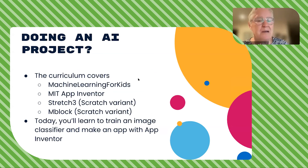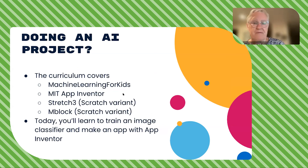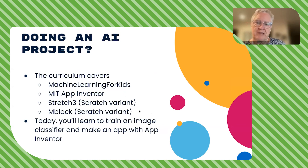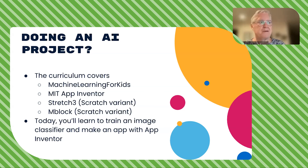If you're doing an AI project, the curriculum covers four different platforms: machine learning for kids to train a model, then App Inventor with its extensions, and a couple of variants of Scratch. That's all covered in the curriculum. The general process is the same: you train the model, test it, and then add it to an app.